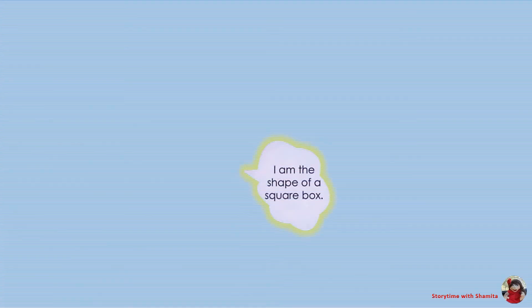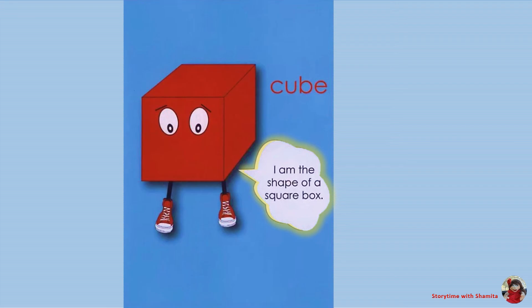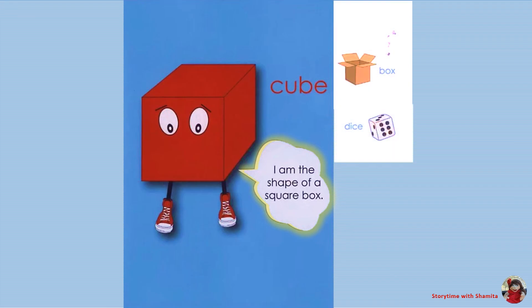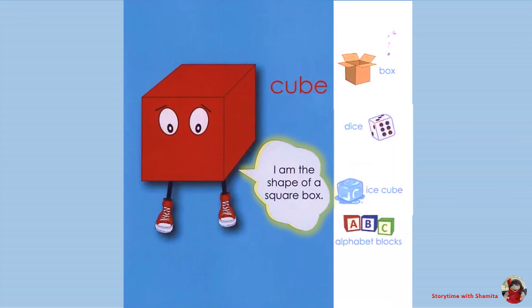I am the shape of a square box. Cube. Examples: box, dice, ice cube, alphabet blocks.